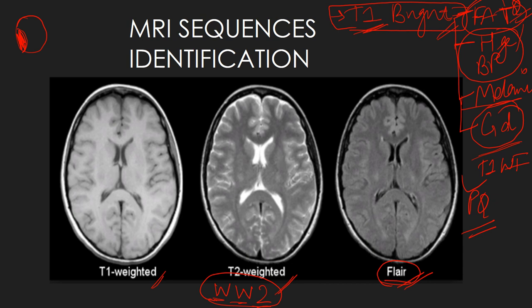Coming back to MRI sequence identification: white matter, which constitutes fat from oligodendrocytes, is bright on T1-weighted. On FLAIR, which is a modification of T2-weighted, the gray matter appears brighter than white matter. This is how we recognize the FLAIR sequence versus the T1-weighted sequence by looking at gray and white matter. Another important topic from MRI is the various contraindications of MRI and the special sequences — we already looked at FLAIR; another is STIR.